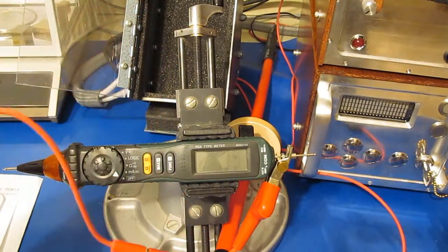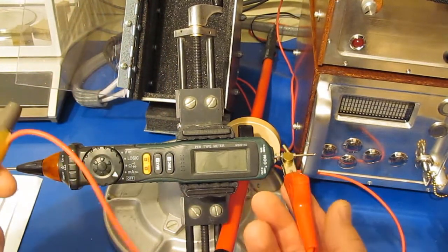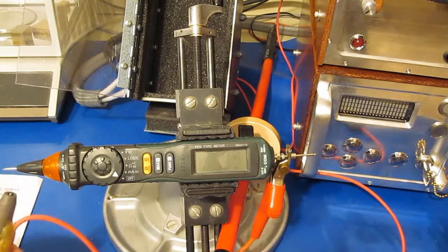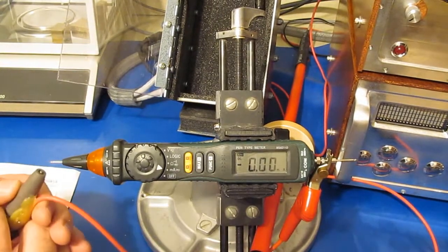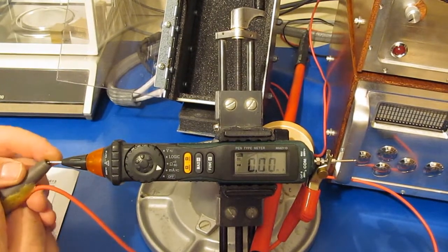Next we'll go ahead and perform our static test. You can see I'm basically just clipping straight across the meter. Again I'll apply 5 transients both positive and negative.